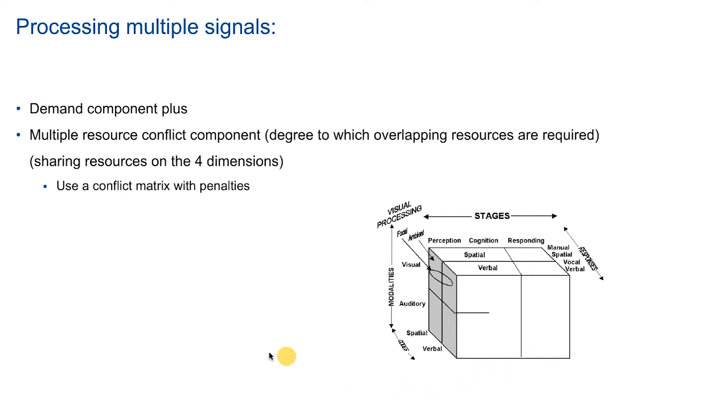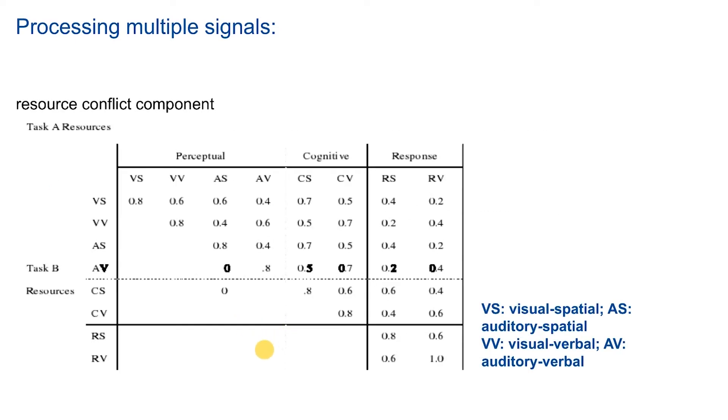The second step now is to calculate which conflicting resources are used by the two tasks. Here we use a kind of conflict matrix. So this is actually built up from empirical results from the laboratory where we found out these kind of values. And if you have a look here, these are the task A, all the different cognitive resources that we might have sorted by the different stages. So this would be visual spatial, for example. This would be auditory spatial. We have the same components for the second task, Task B. The whole idea is now just to find out if our two tasks that we are currently trying to model share the same resources or resources that result in a conflict if they are both active.